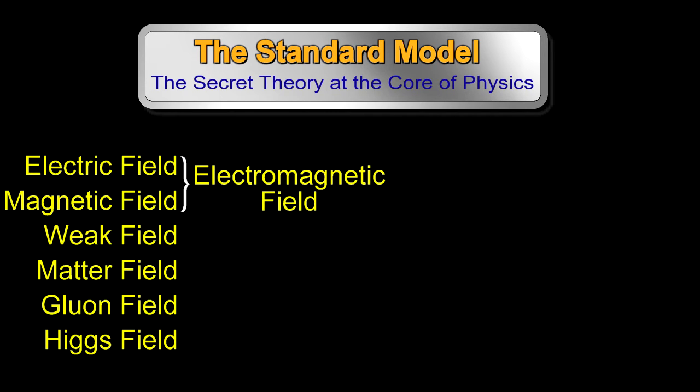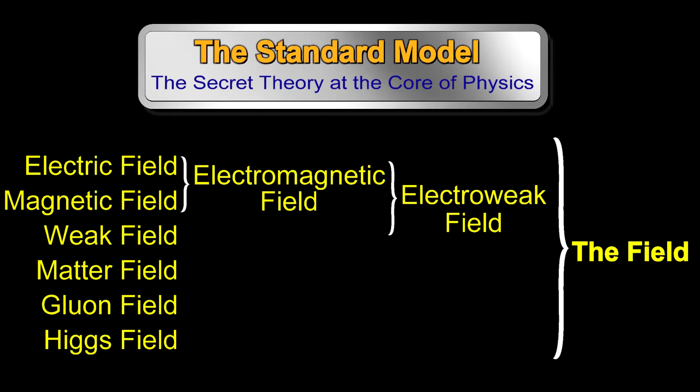In the 1960s, we learned that you can group the electromagnetic field with the weak field to form the electroweak field. The goal is to describe everything in terms of a single field.